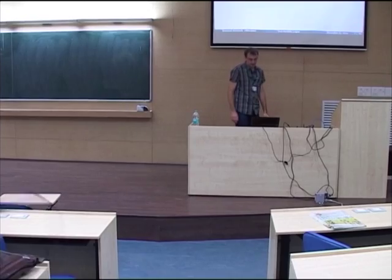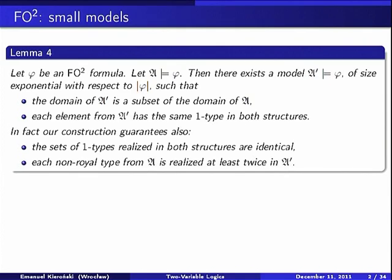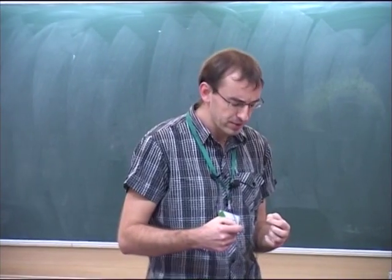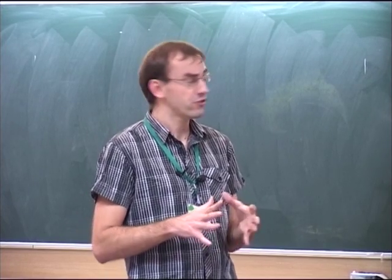Let me first recall some of the things we saw yesterday. The first result I presented was the small model property for the two-variable fragment of first-order logic. In our construction, we started from an arbitrary model of a formula phi and constructed a new model whose domain was a subset of the domain of the original model.